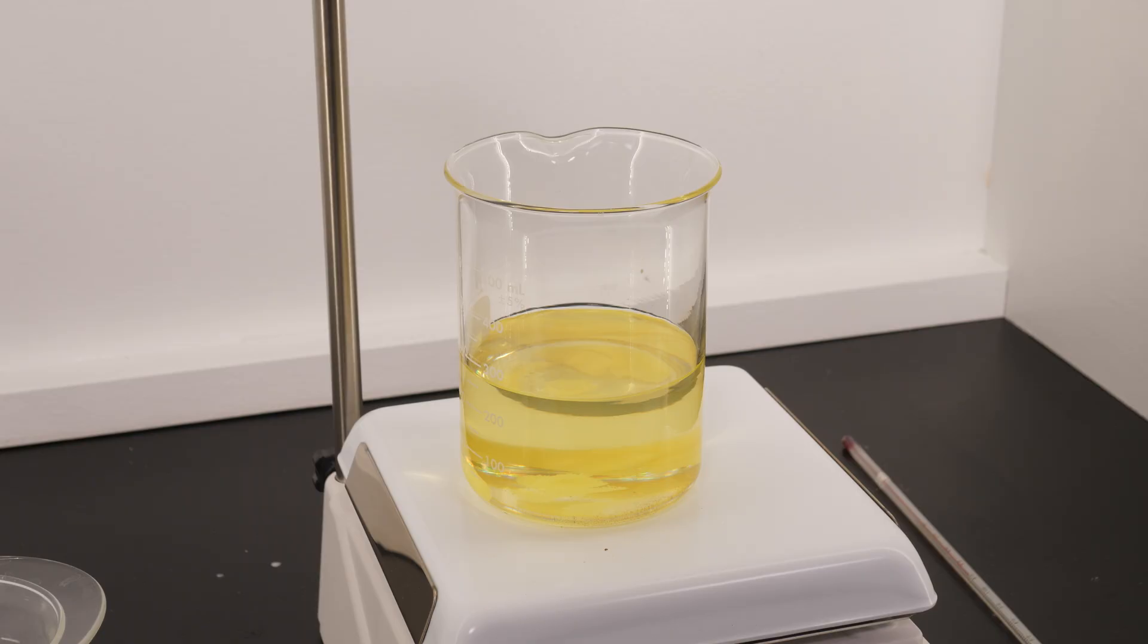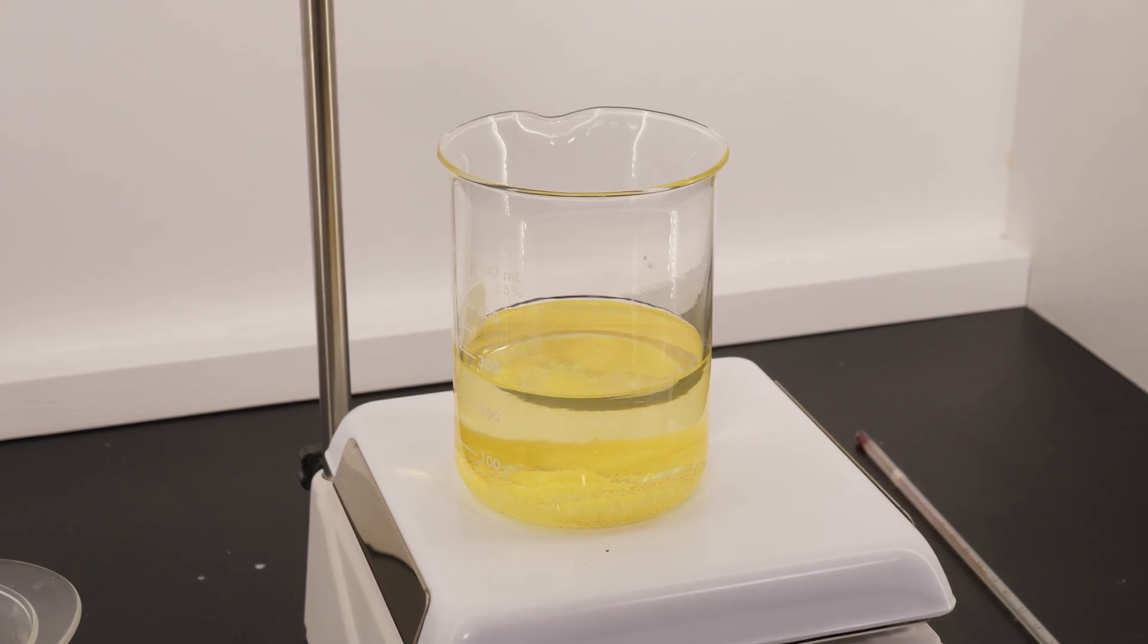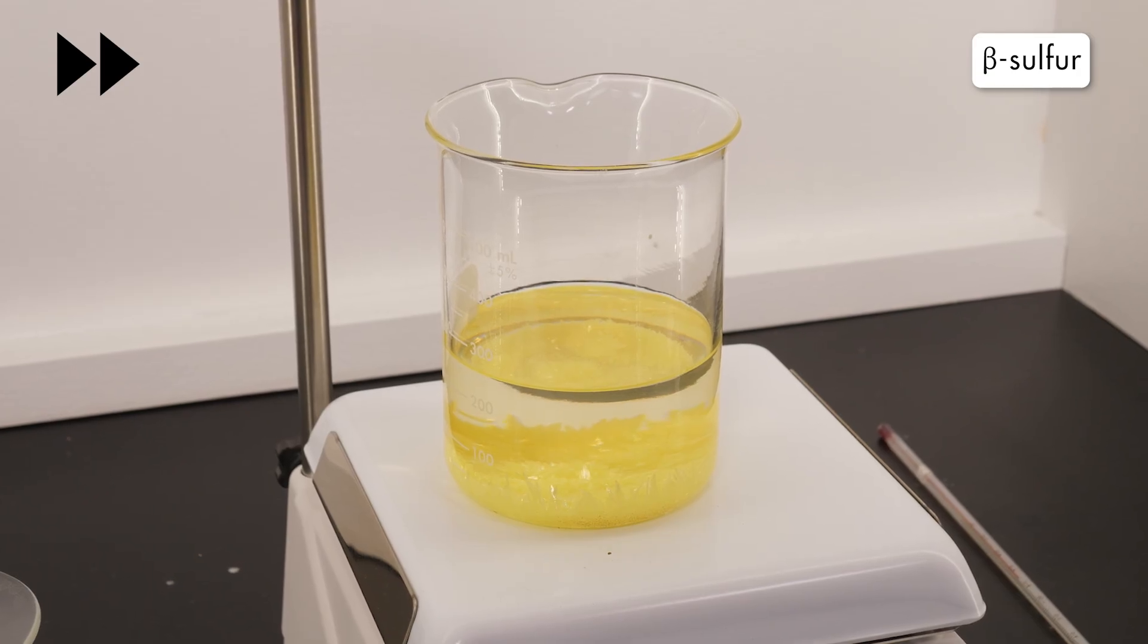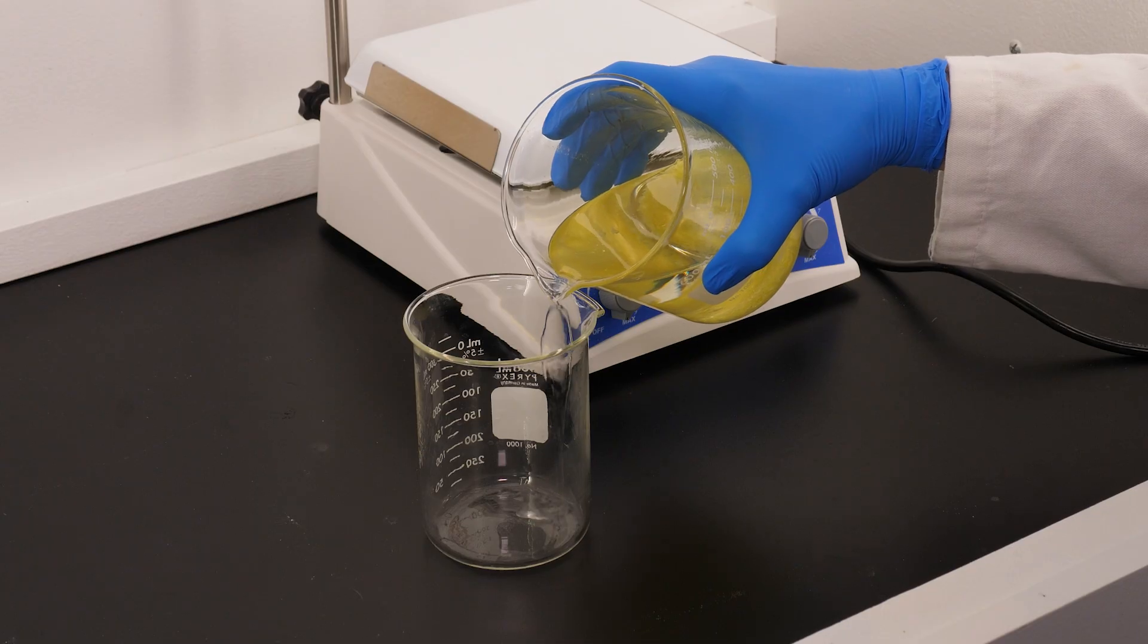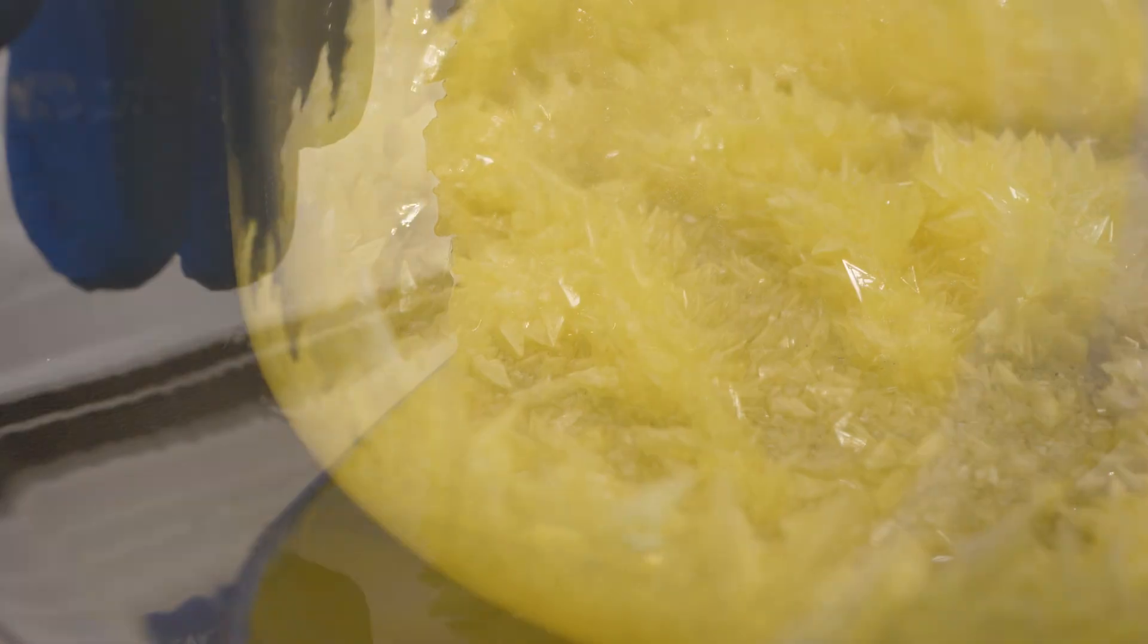It will take several hours for the sulfur to recrystallize, so we will speed up the camera action. Notice the monoclinic beta-sulfur crystals forming. We can see the crystals clearly if we pour off the excess dimethylbenzene.